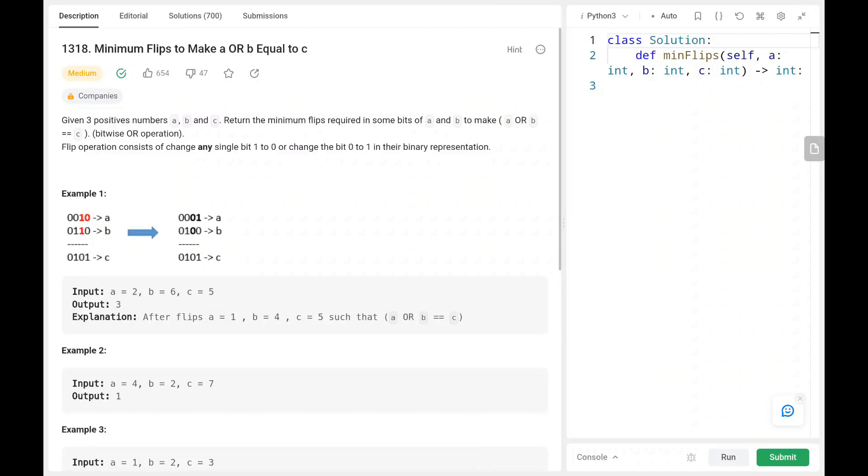Hey everyone, welcome back. Today we are going to solve problem number 1318, minimum flips to make a OR b equal to c. First we will see the explanation of the problem statement, then the logic and the code. Now let's dive into the solution.